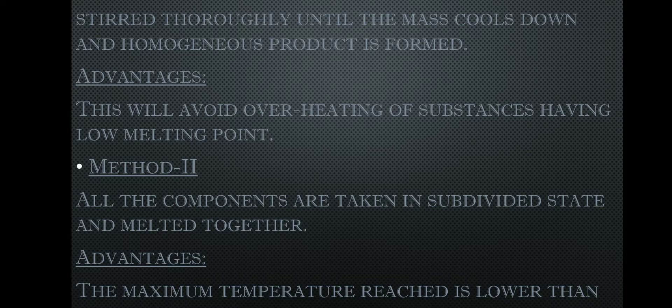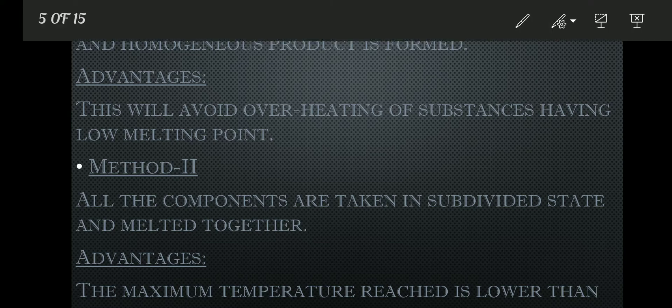In Method 2, all the ingredients are taken in a sub-divided state and melted together. All the base components are taken together, first reduced in size — cut or sub-divided — so that they melt faster. The advantage is that the maximum temperature required is lower than in Method 1, because all components melt simultaneously and less time is needed overall.